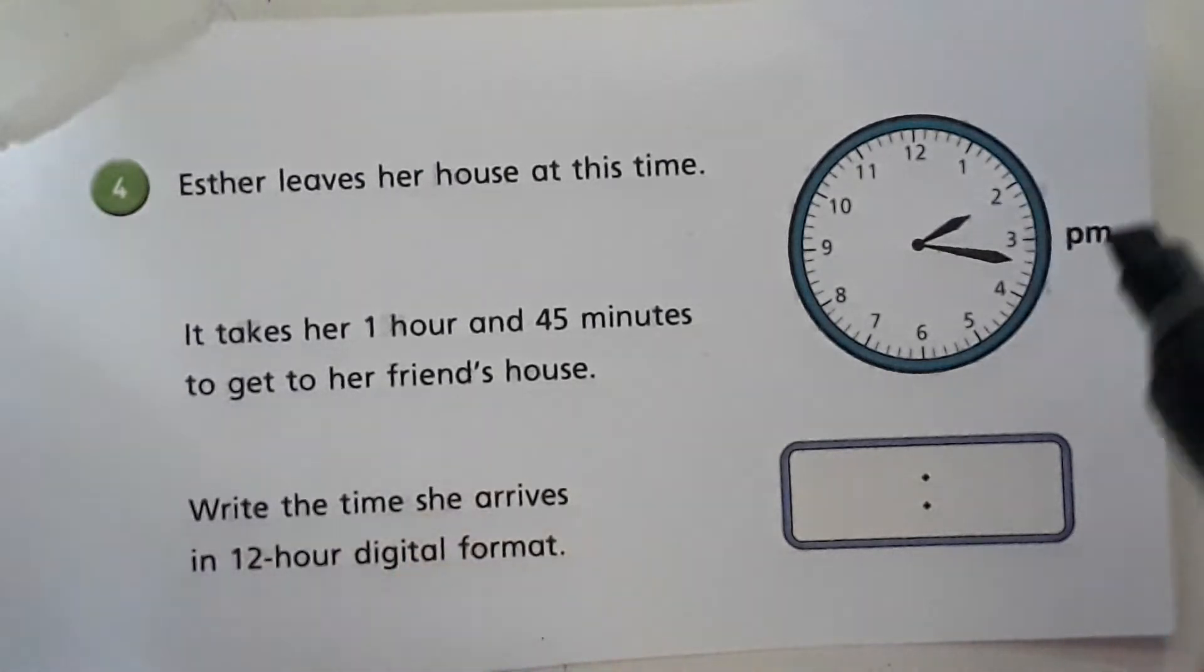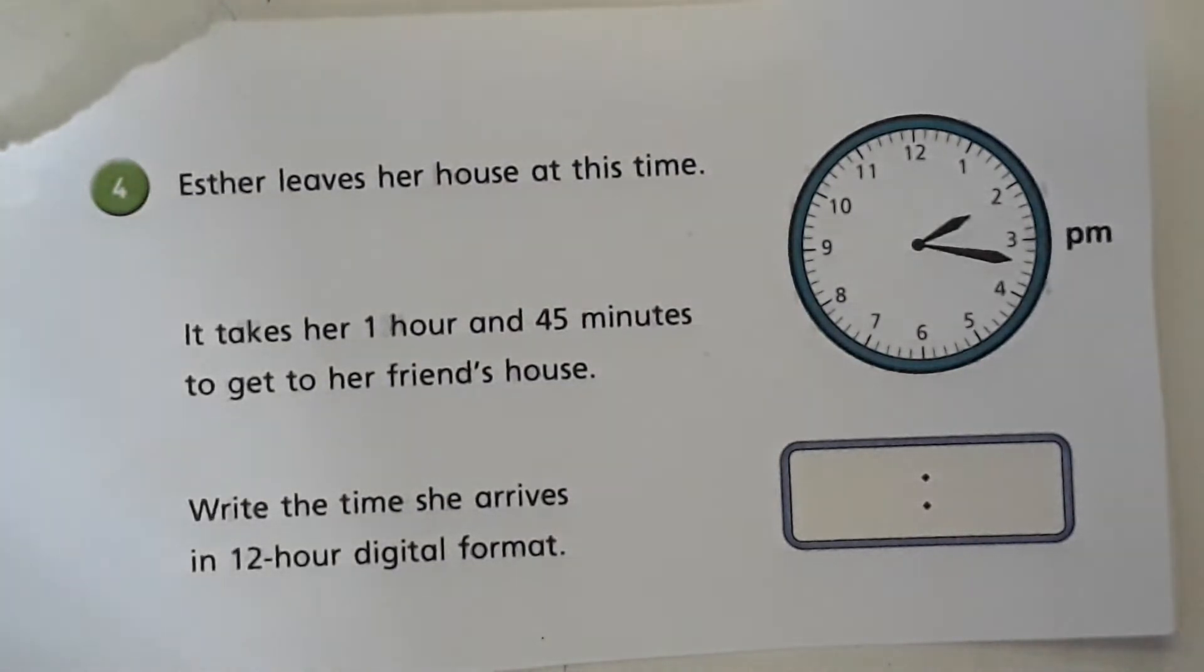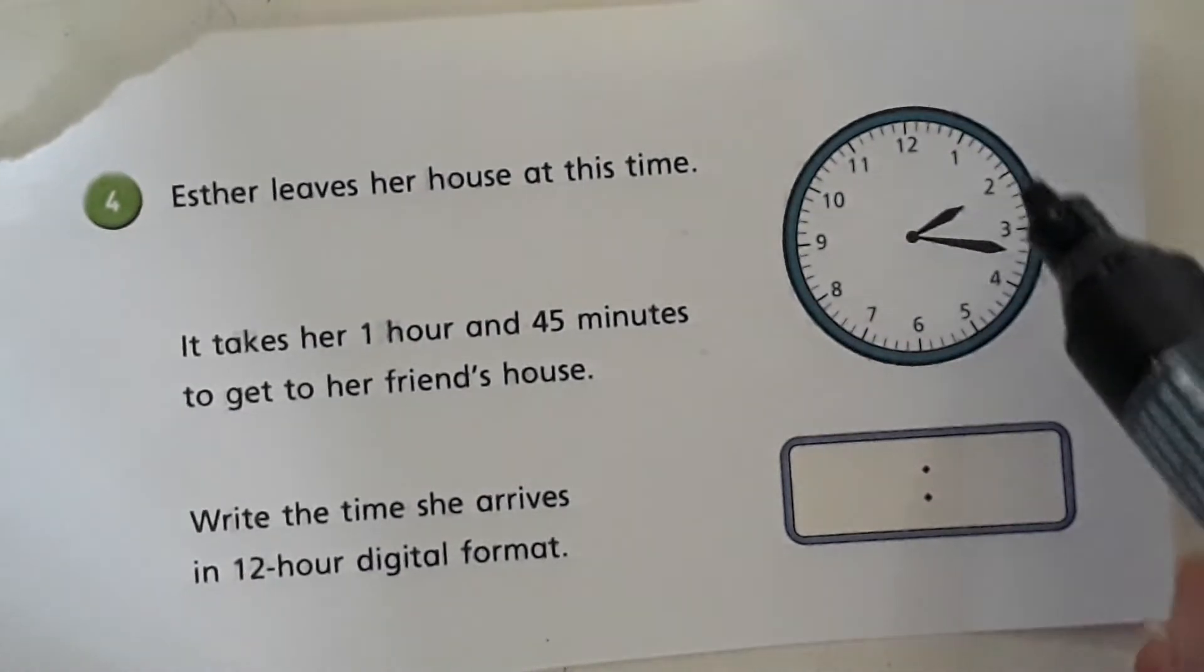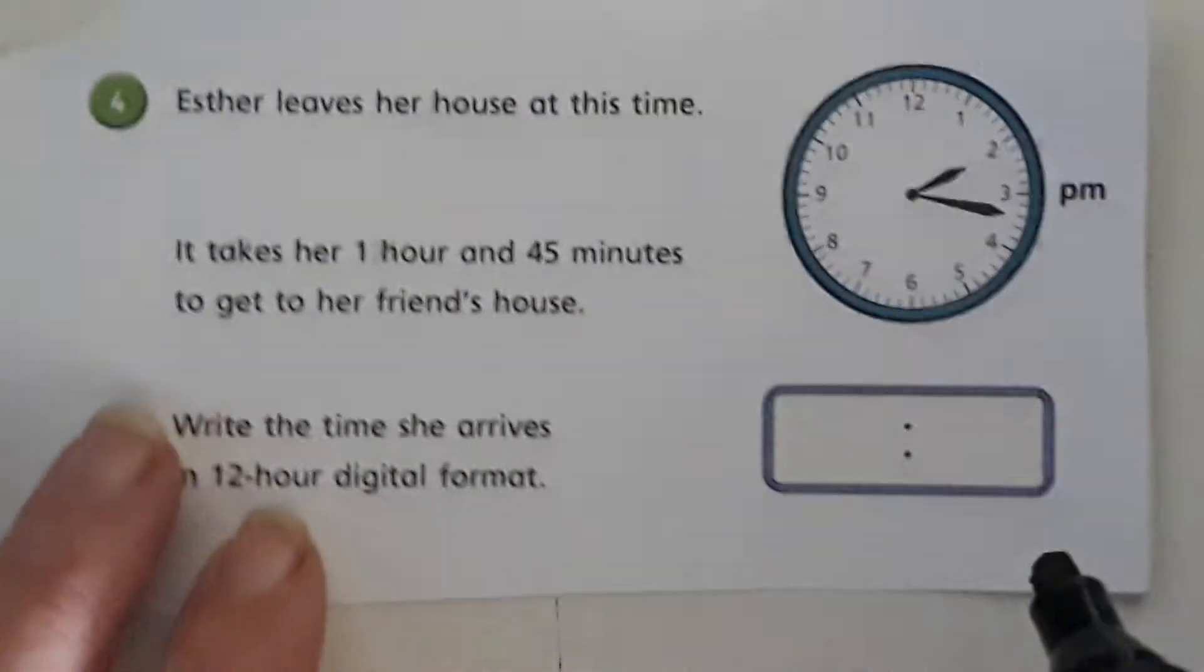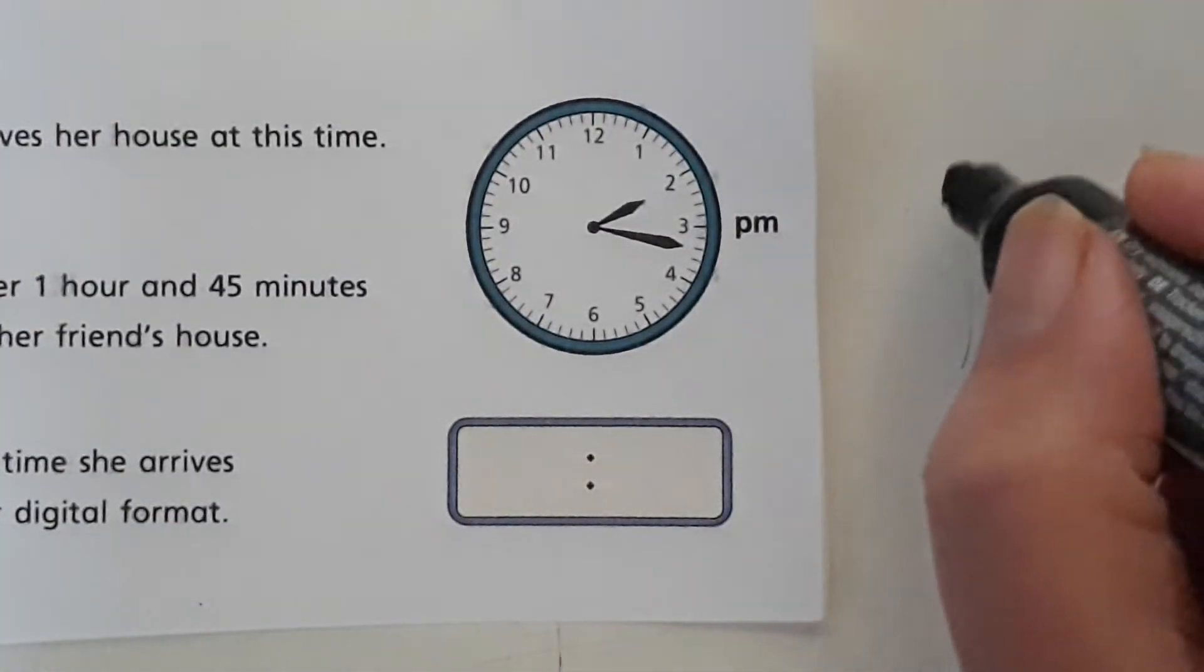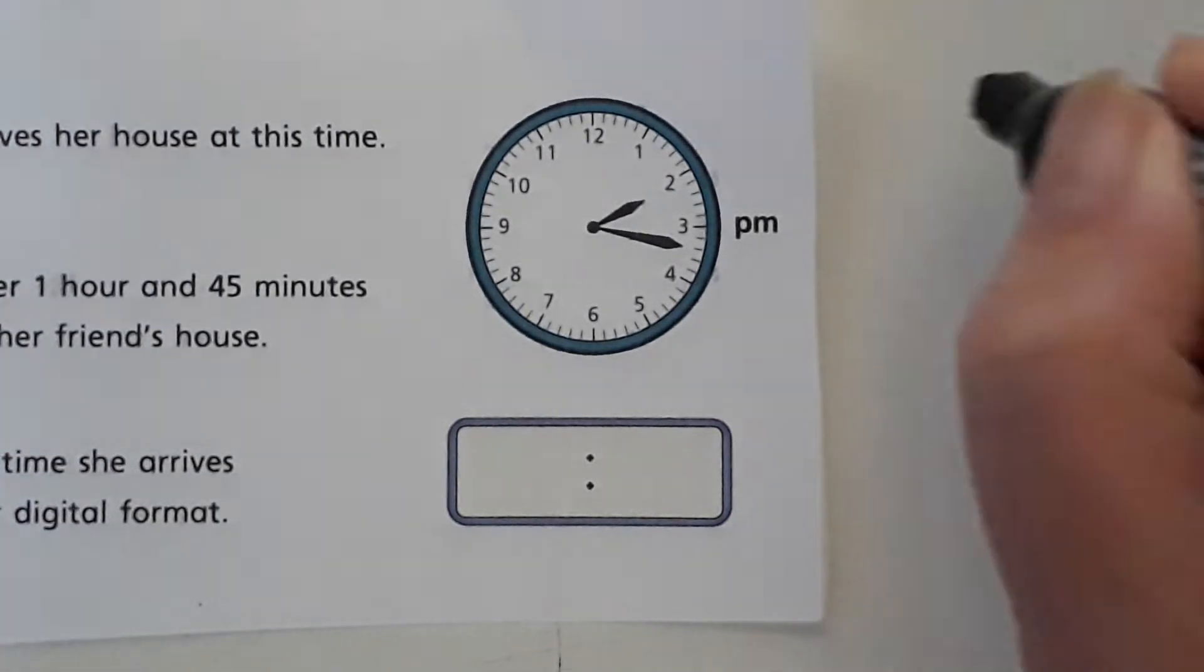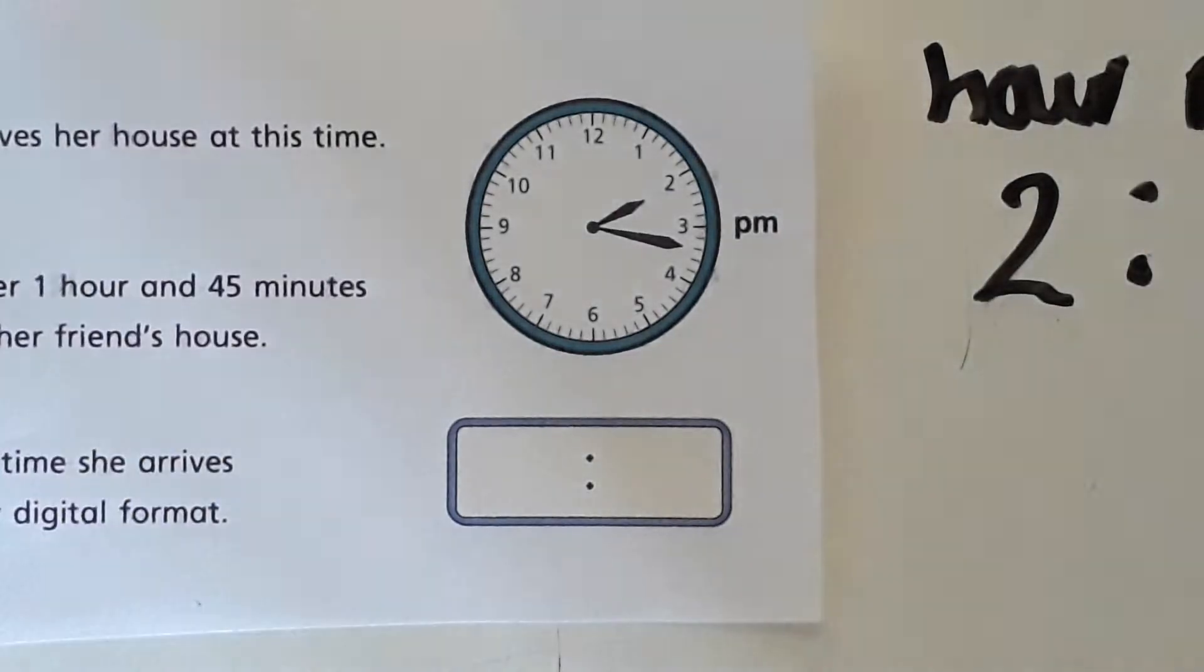The minute hand has come around exactly to the minute—it's gone 5, 10, 15, then 16, 17. So it's 17 minutes. Now we need to think about the hour. The hour hand has just gone past the two, so it's 2:17, and we know that's in the afternoon, PM.